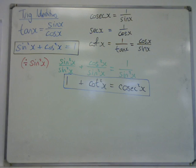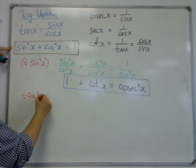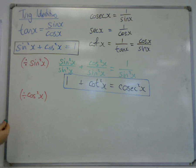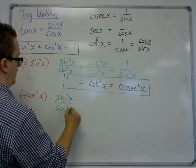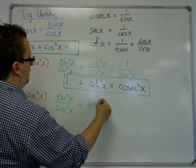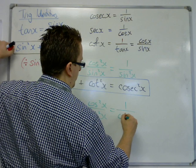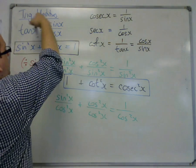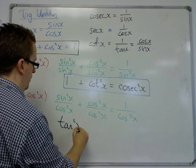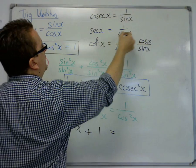Now if we go back to our original identity, and this time, instead of dividing by sine squared, we divide by cos squared, then we have sine squared divided by cos squared, we have cos squared divided by cos squared. So sine squared divided by cos squared will be tan squared, cos squared over cos squared is 1, and 1 over cos squared will be sec squared.